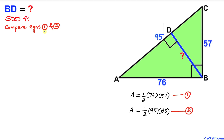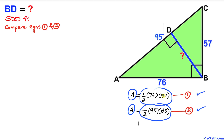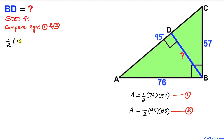In our final step, let's compare equations one and two. Since the left-hand sides are the same (area A), we can equate the right-hand sides. So we write: one half times 76 times 57 equals one half times 95 times BD.